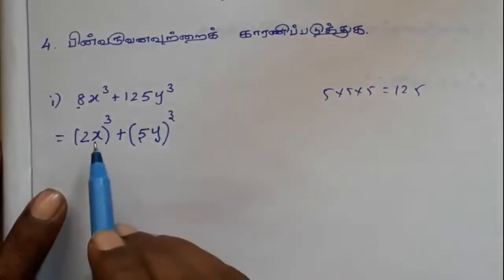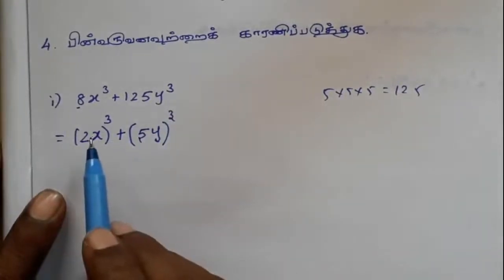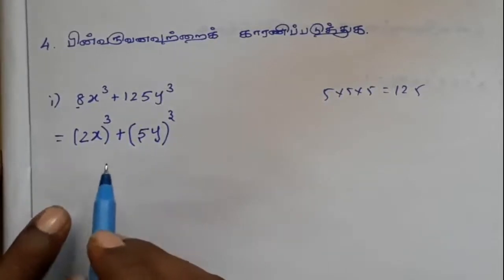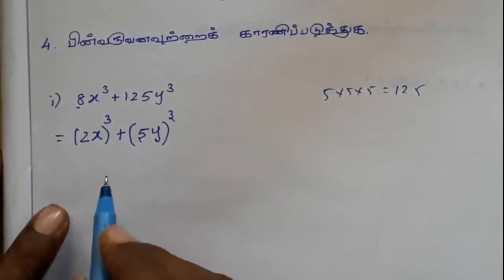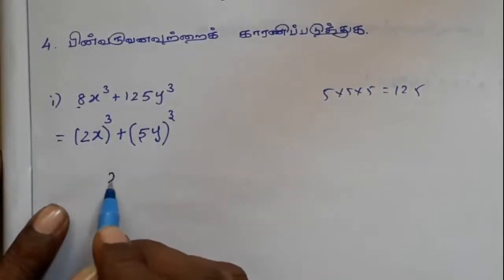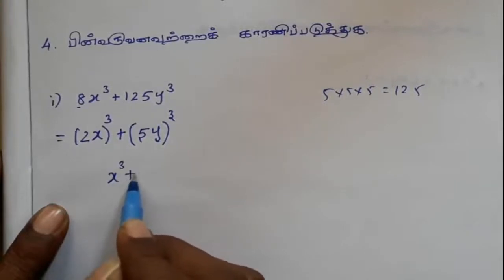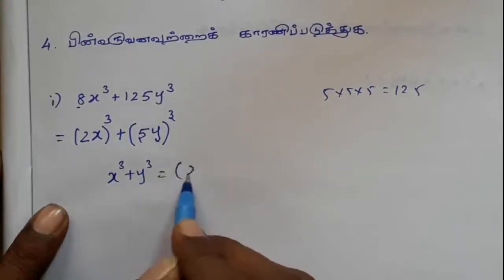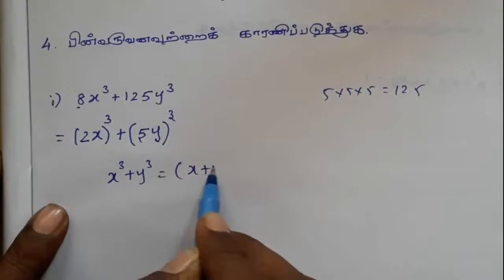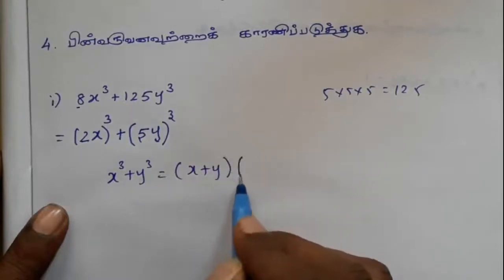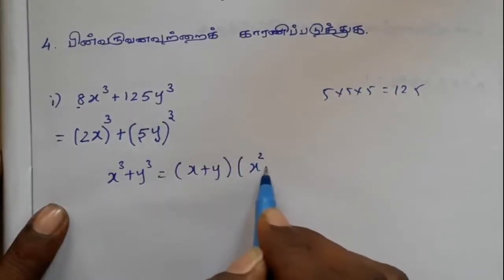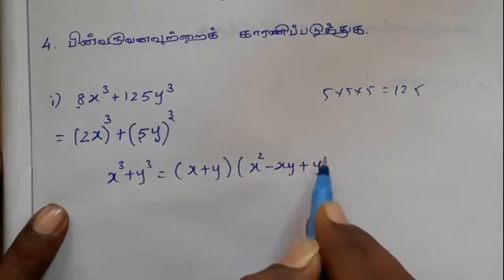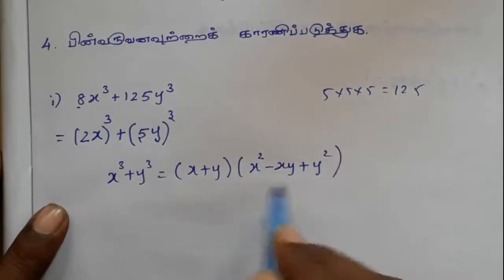Let's try the formula. x cube plus y cube is equal to x plus y, x squared minus xy plus y squared. It's a formula.